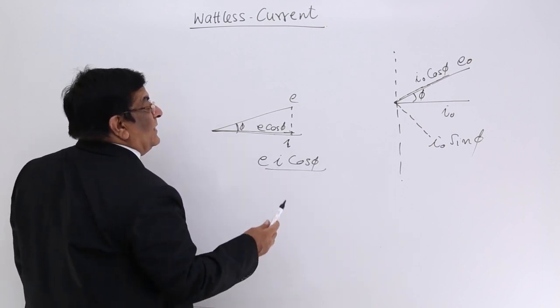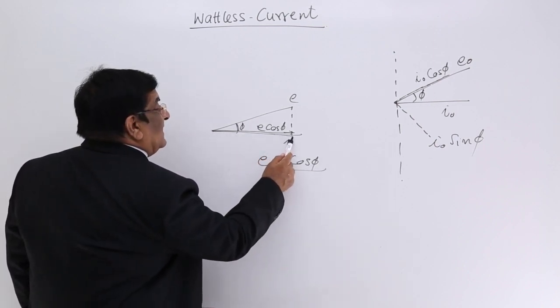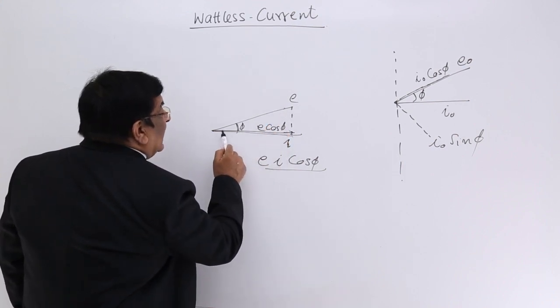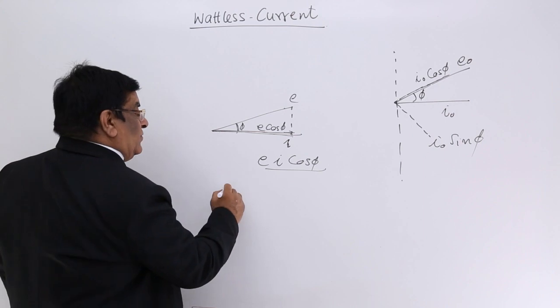In the power calculation, what are we doing? We are multiplying current with that component of E which is in the direction of current. We can do the same thing,